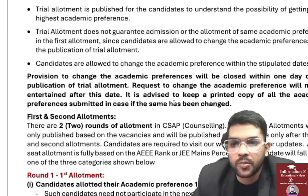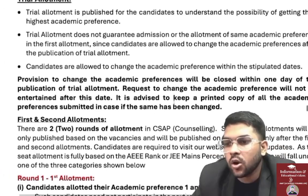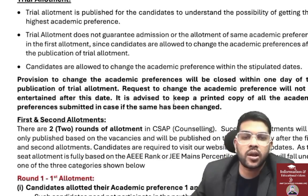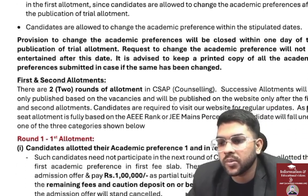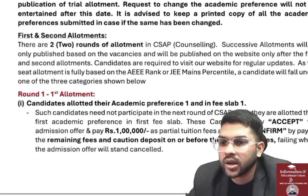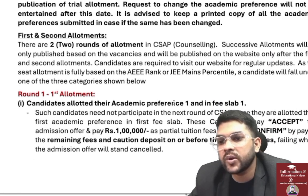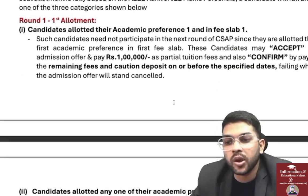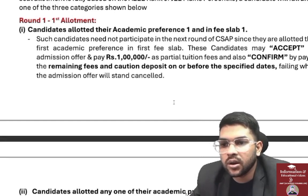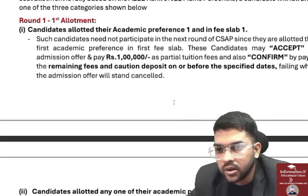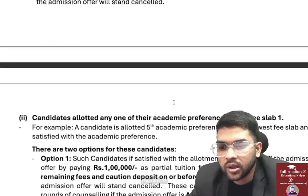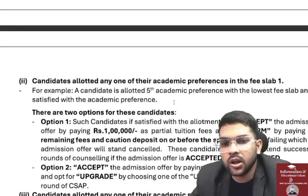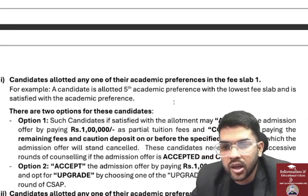The option to change academic preferences will close within one day of the trial allotment publication — so after the trial allotment, if you think your choices are not correct, you can still change them. Thereafter, the first and second allotments will be done, followed by successive allotments if vacancies are available. After the first allotment, you need to pay ₹1 lakh and accept the remaining fee and caution deposit before the specified date.